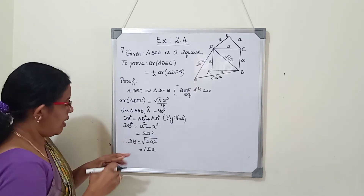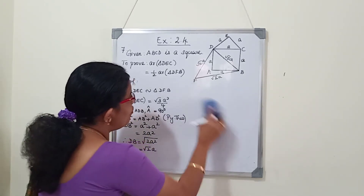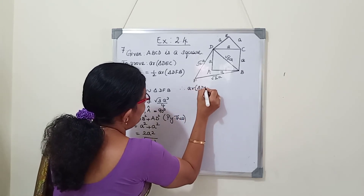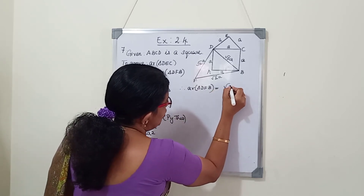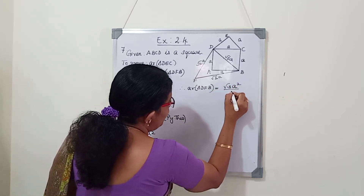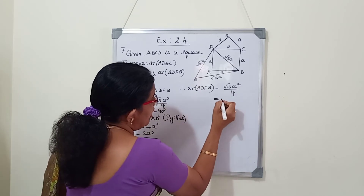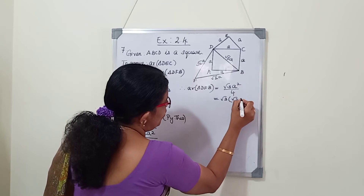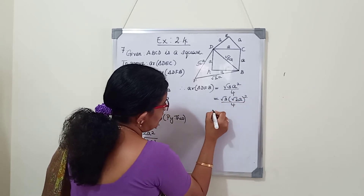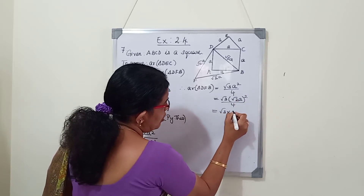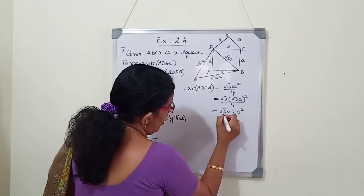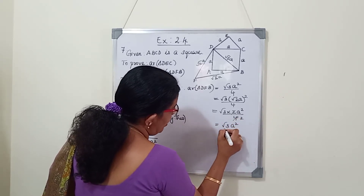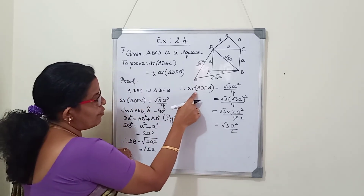Now we find the area of triangle DFB. Area of an equilateral triangle is root 3 times side square by 4. Here the side is root 2A, so area equals root 3 times (root 2A) whole square by 4, which equals root 3 times 2A square by 4, which simplifies to root 3A square by 2. This is the area of triangle DFB.